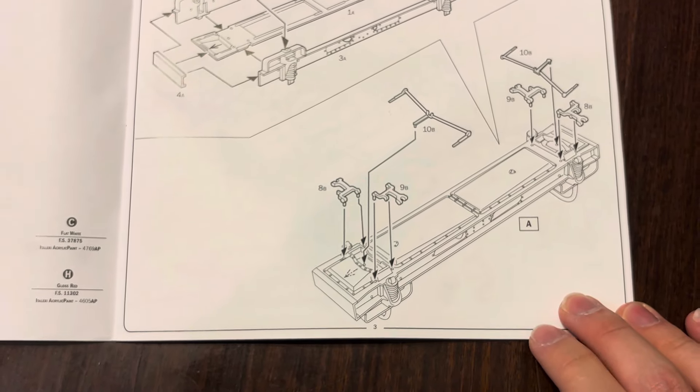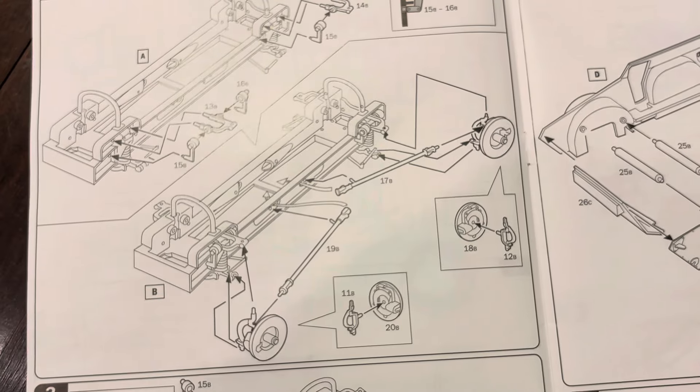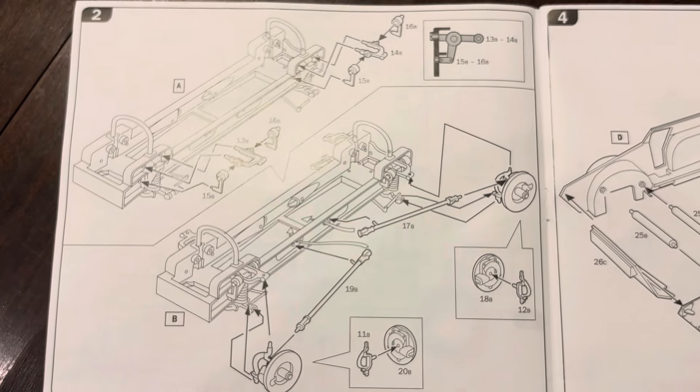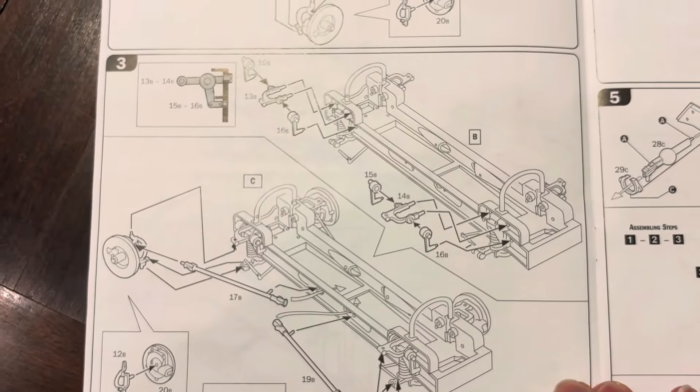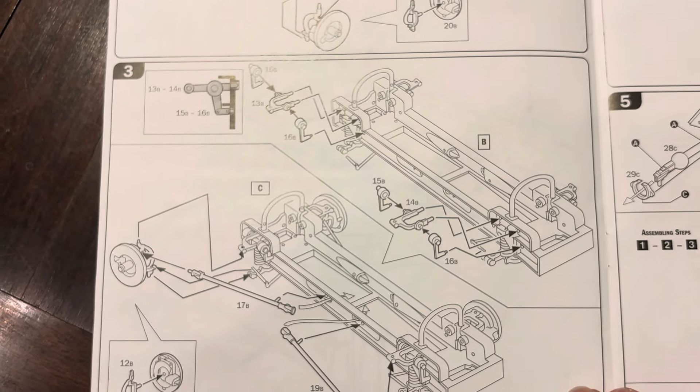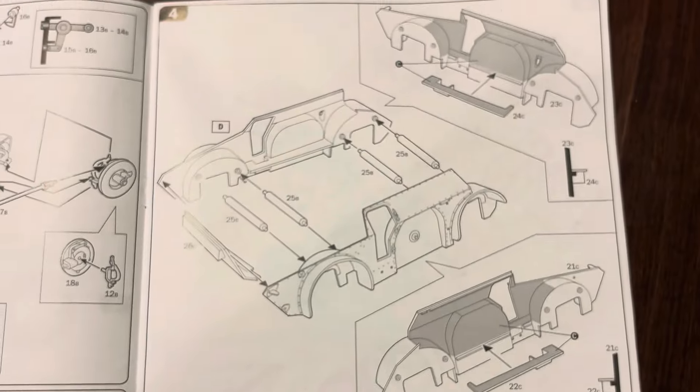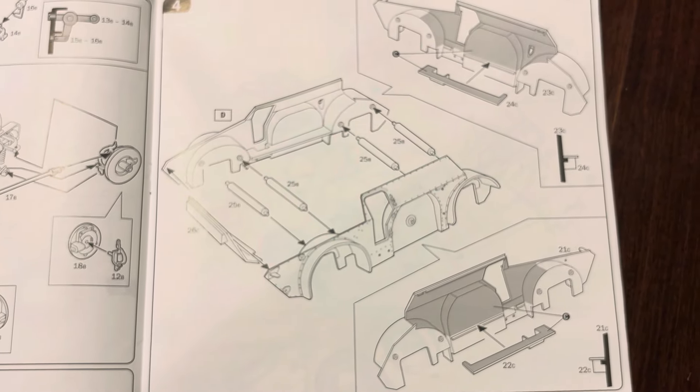Step one is the undercarriage, the bottom of the car. Here's the steering. Step two is adding the drive shafts I think that's what that's called. Step three is more steering stuff. Step four is putting together the main body.